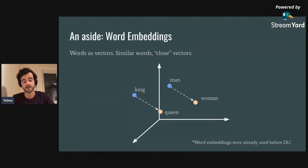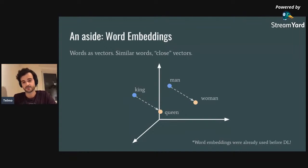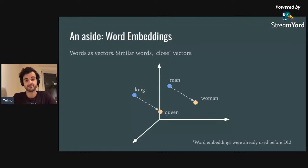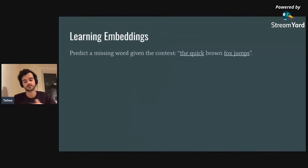People have done fascinating things with word embeddings. For instance, if you take the vector pointing from 'man' to 'woman' and the vector from 'king' to 'queen', they are very similar. So you can do word arithmetic: take the vector for 'king', add the vector pointing from 'man' to 'woman', and you get a vector very close to the embedding for 'queen'. This captures semantic relationships in language.